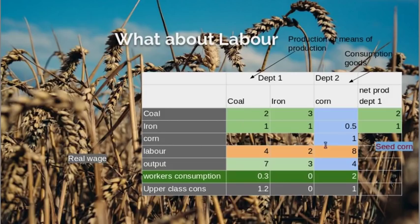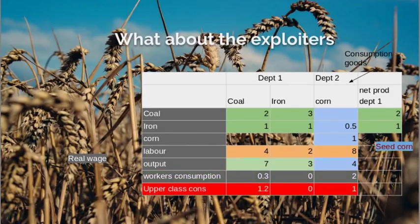The corn industry produces corn but has to use up some seed corn to produce it. So it outputs four units of corn, uses up one unit, and has a net output of three units of corn. Some of this output goes as a real wage — I'm assuming the workers are consuming 0.3 units of coal and two units of corn, so they're kept warm and able to eat.